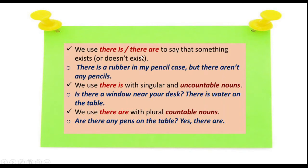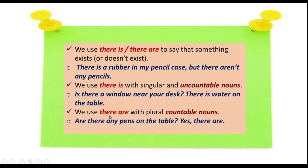We use 'there is' and 'there are' to say that something exists or doesn't exist when it is negative. For example: there is a rubber in my pencil case, but there aren't any pencils. We also use 'there is' with singular and uncountable nouns. For example: is there a window near your desk? — a window is singular. There is water on the table — water is uncountable.